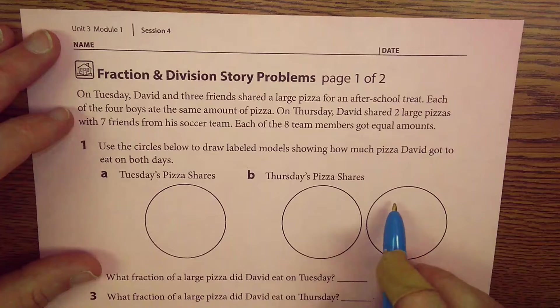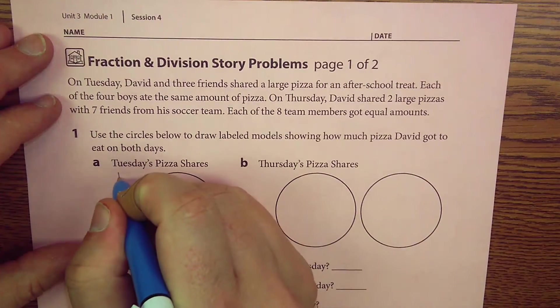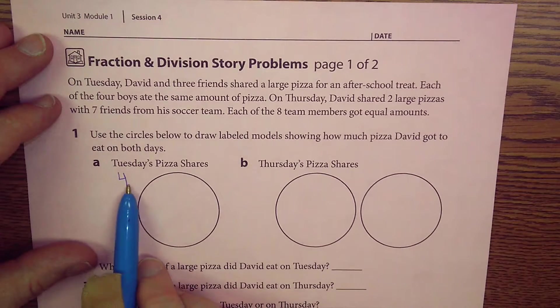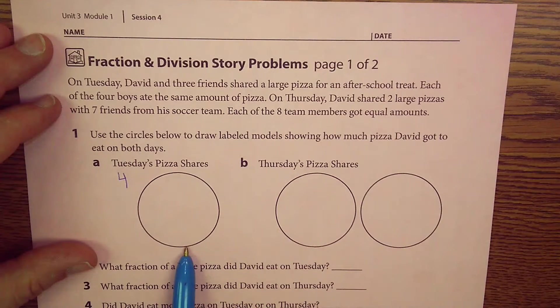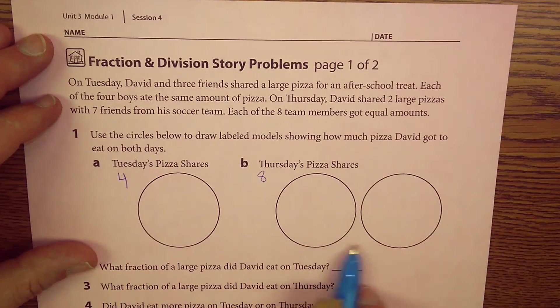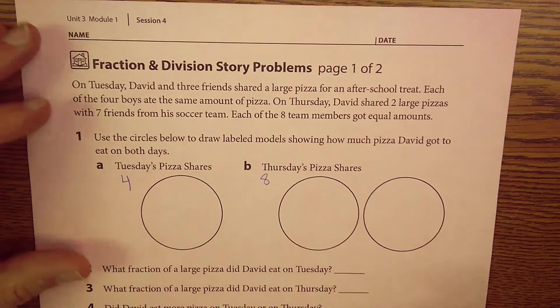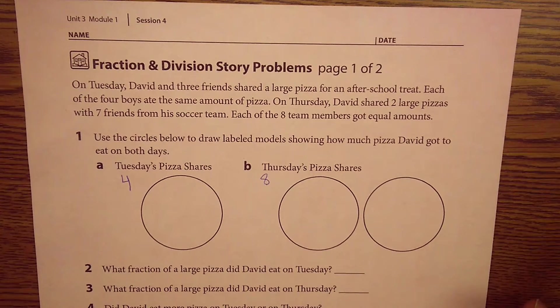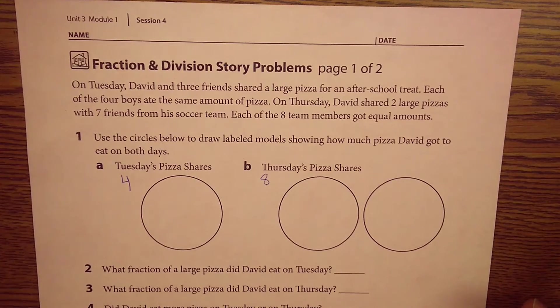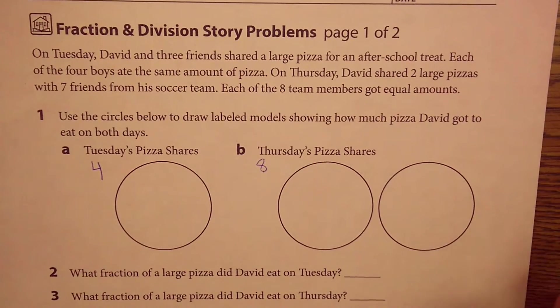So in this story problem, it is saying that David and three friends, that's four people, ate this pizza. And then on Thursday, David and seven friends, that's eight people, ate these two pizzas. And we need to split up this pizza so everybody gets the same size of slices. So I'm going to zoom in just a little bit more, and then we're going to dig in.